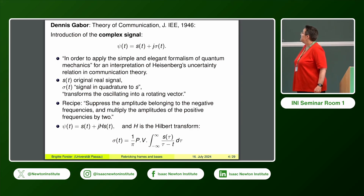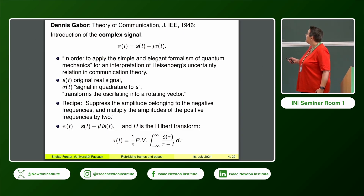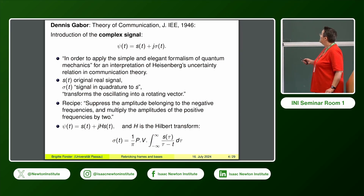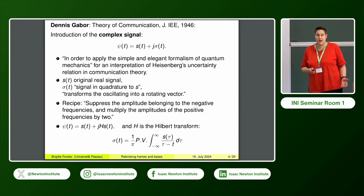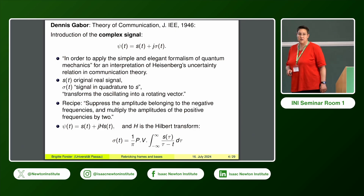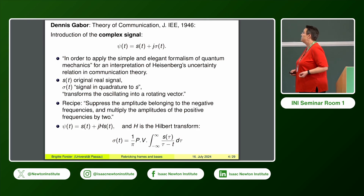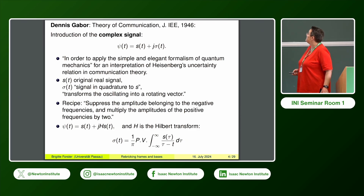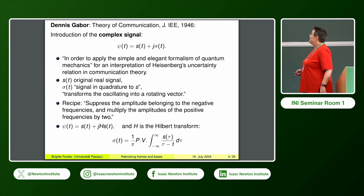This was the starting point from a nice paper by Dennis Gabor in 1946 in 'Theory of Communications,' where he introduced the complex signal. What he did was taking the signal measured in the real part and putting something in the imaginary part—here the J indicates the imaginary part, as Gabor was an engineer. He tries hard to convince his peers, giving five reasons why looking at such a construct is interesting. First, he says, in order to apply the simple and elegant formalism of quantum mechanics for signal processing and interpretation of Heisenberg's uncertainty relation in communication theory.